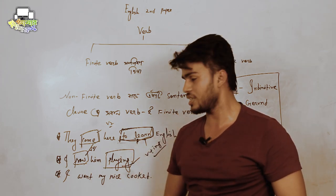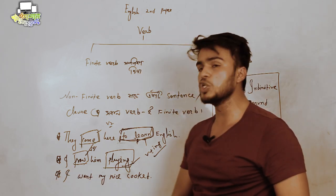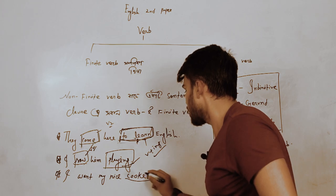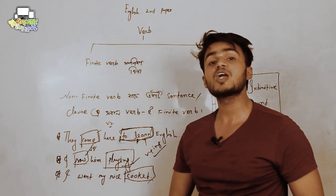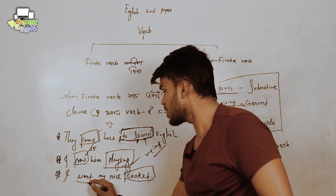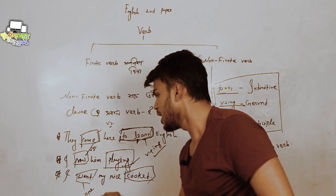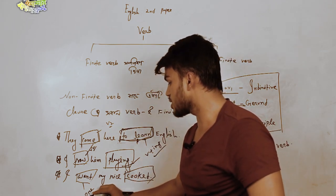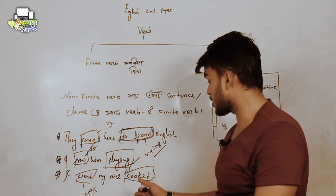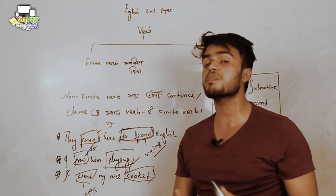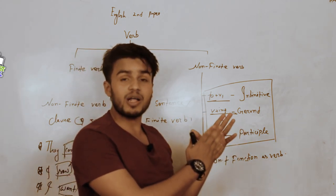Third example: 'I want my rice cooked'. 'Cooked' is a non-finite verb. 'I want my rice cooked' - 'want' is in present tense, but 'cooked' I don't want to justify now, right? So this is the structure. This is how you identify non-finite verbs.